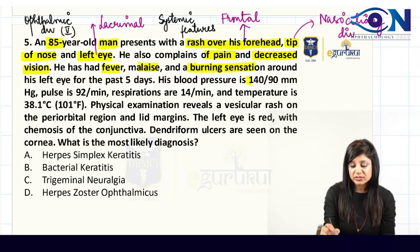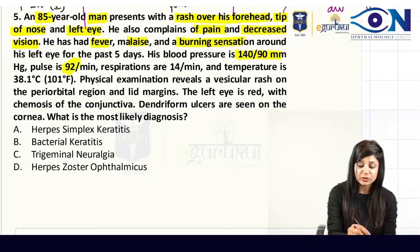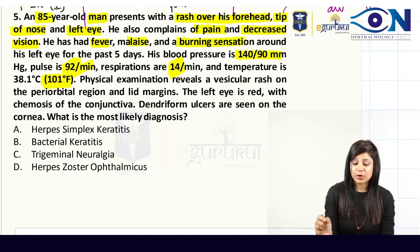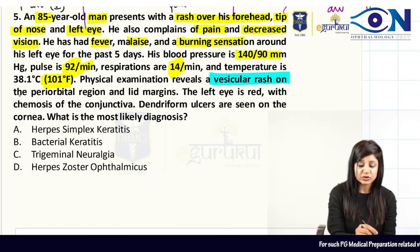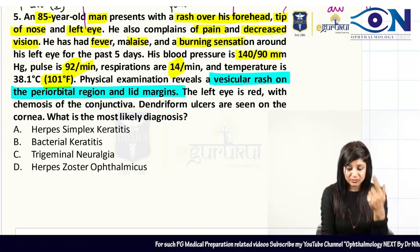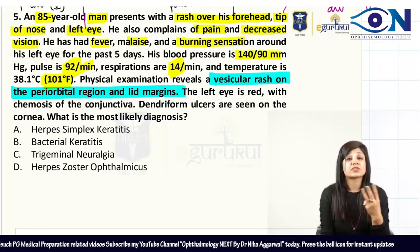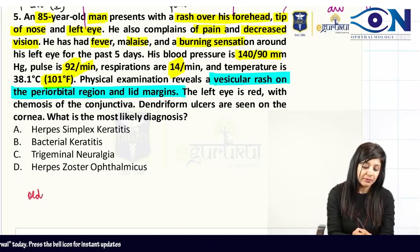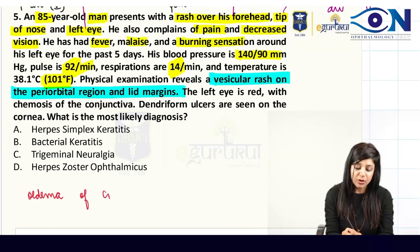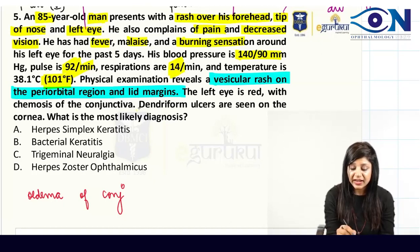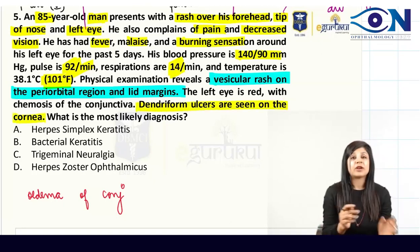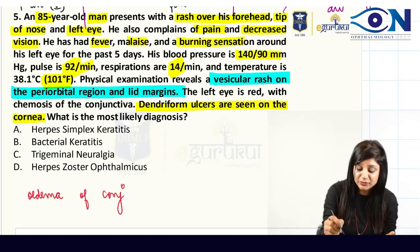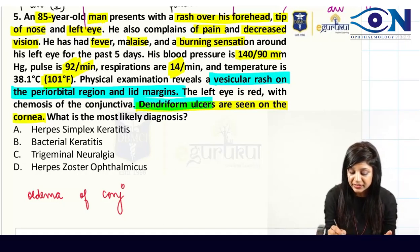The blood pressure is slightly elevated at 140/90, pulse 92, respiration 14, and there is fever. Importantly, there is a vesicular rash on the periorbital region and lid margins. The eye is red with chemosis — which is edema of the conjunctiva — and there are dendriform ulcers over the cornea.